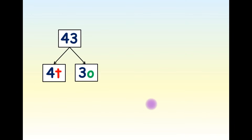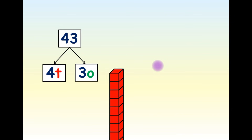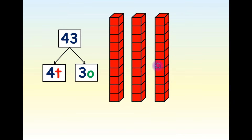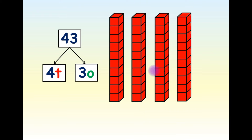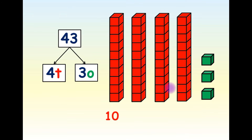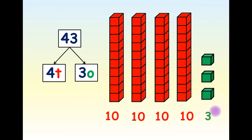Another way to decompose 43 is to separate the 4 tens. We know that the value of 4 tens is 40. We can add it like this: 10 plus 10 plus 10 plus 10 equals 40, plus 3 ones equals 43.